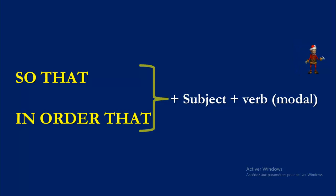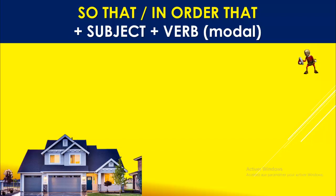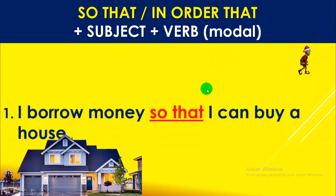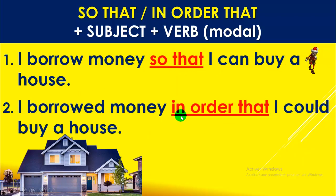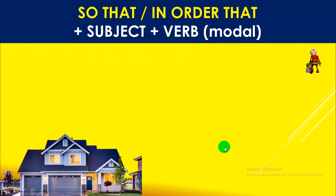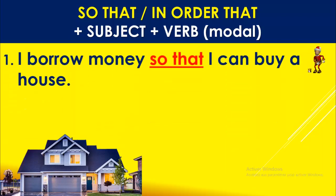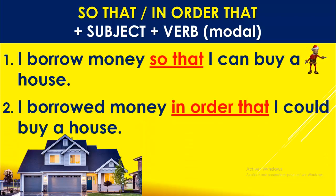'So that' / 'in order that' + subject + verb (sometimes a modal). Example: I borrow money so that I can buy a house. So here: 'so that' + subject + modal, as you can see here.